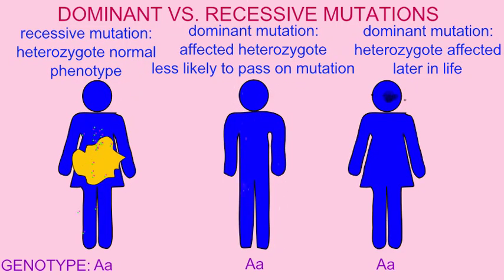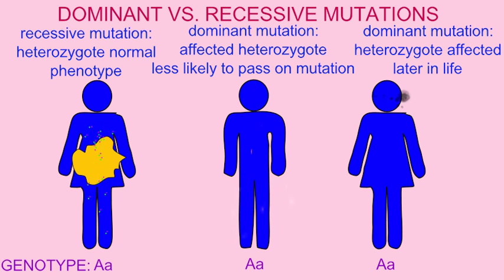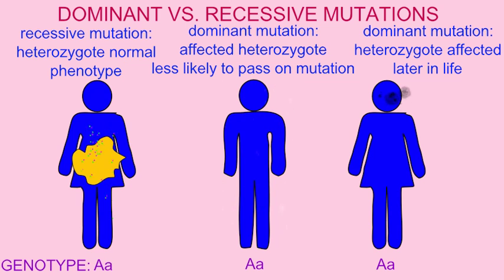Autosomal recessive mutations are more common than autosomal dominant mutations. The reason for this is that a heterozygote for a recessive mutation has the normal phenotype, and so they do not have adverse consequences for carrying the mutant allele, but they can still pass this on to the next generation.